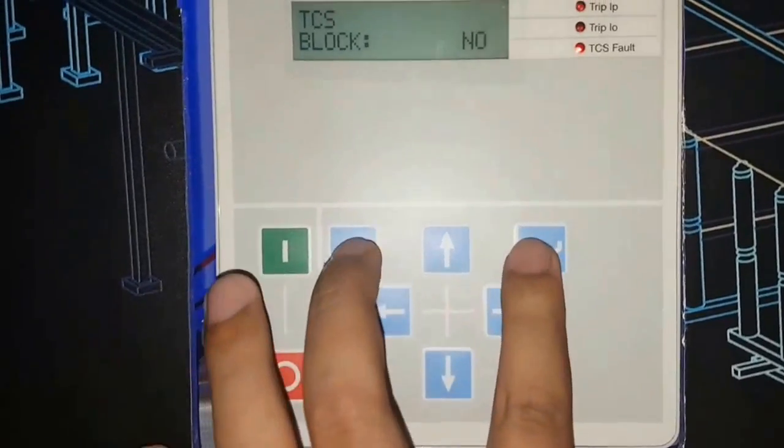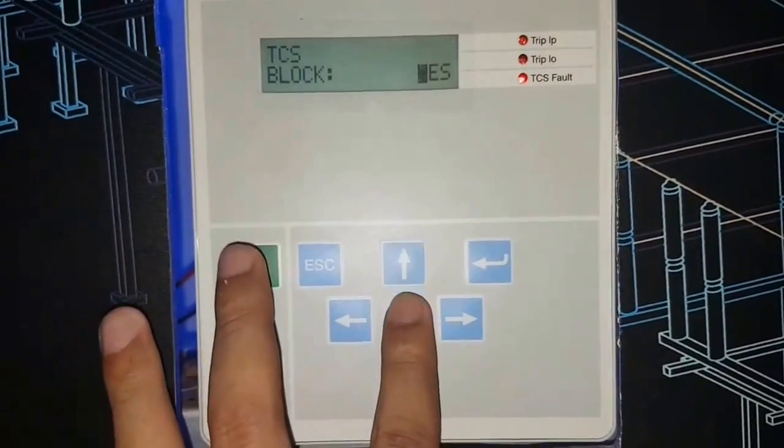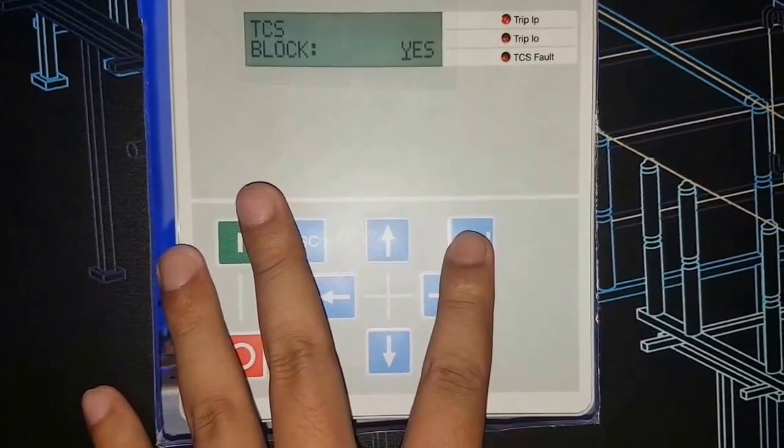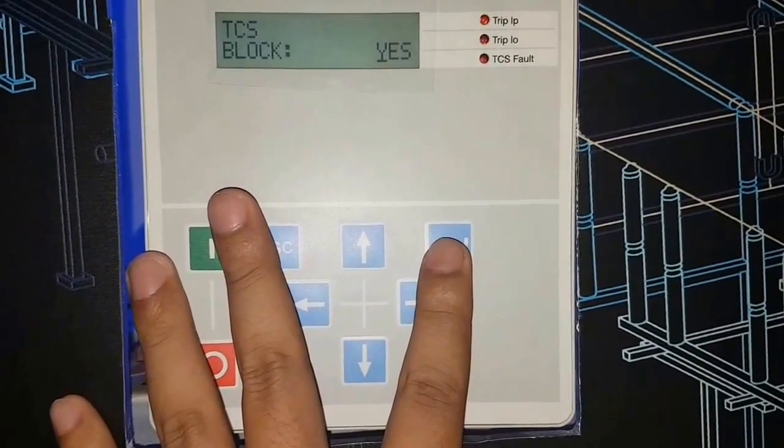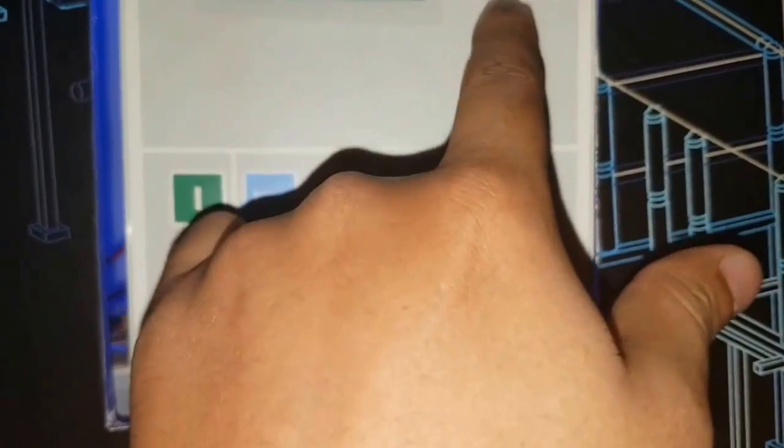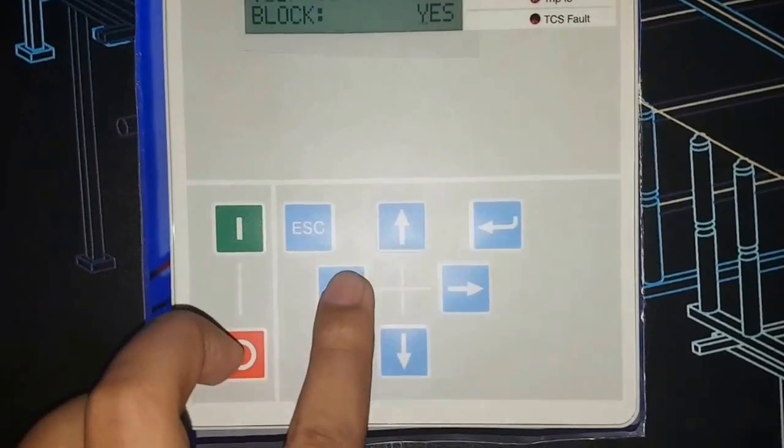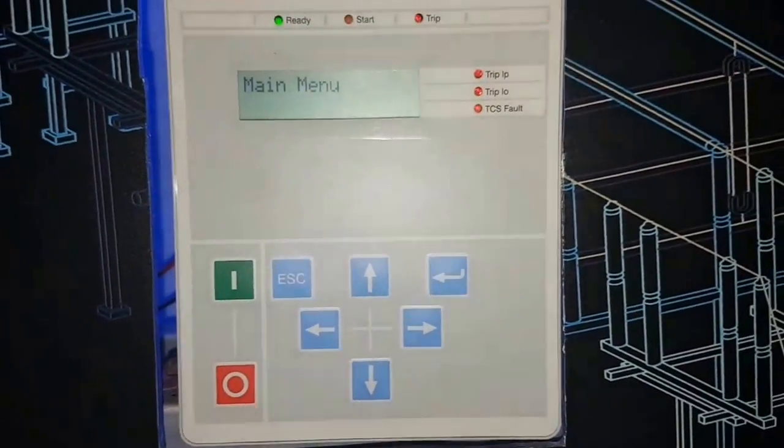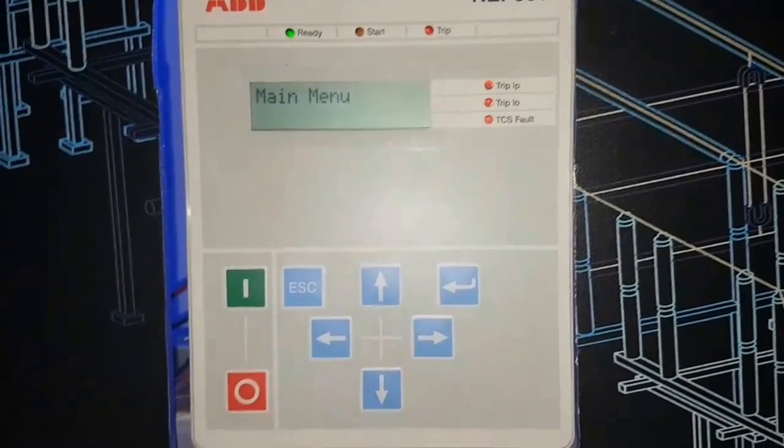By this, no to yes. Then the change will happen. Now no TCS fault here. Now just go back like this. So this is REF601.